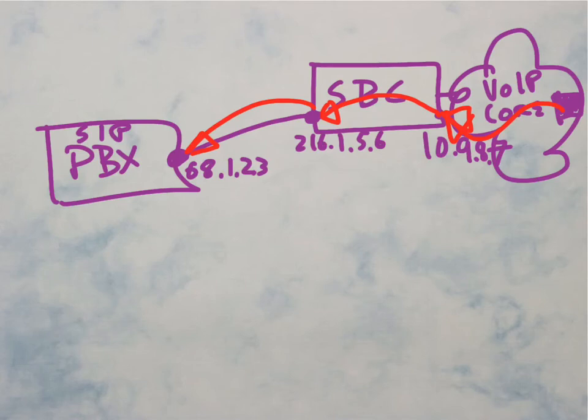And then on the other side, when we're sending a call in, the SBC needs to know, well, when I receive a call from 68.1.2.3 and that call comes into 216.1.5.6,